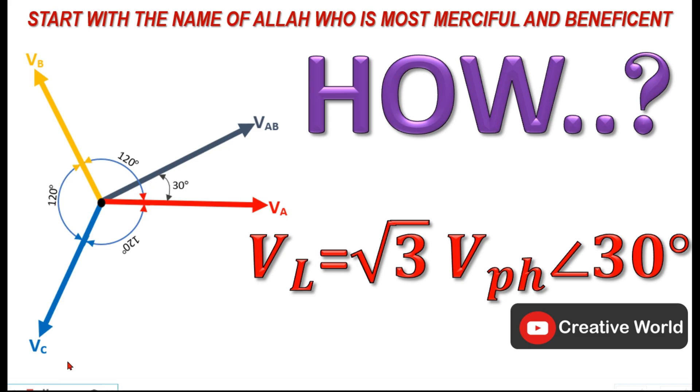Bismillahirrahmanirrahim, welcome to Creative World. The formula written here is intensively used in electrical engineering. This is basically the formula of line voltage which are measured between two phases. It states that the line voltages are equal to the square root of three times V phase, and their angle is 30 degrees leading with phase voltages.